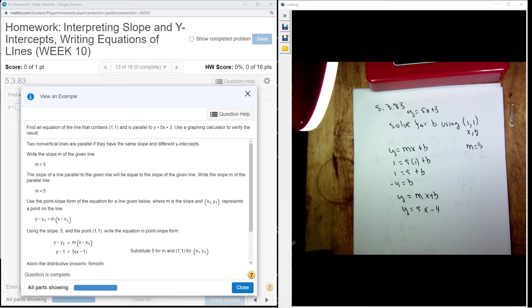Okay, now for this one, he asks us to find an equation of the line that contains the point 1, 1, and it's parallel to y equals 5x plus 3. Use the graphic calculator to verify.